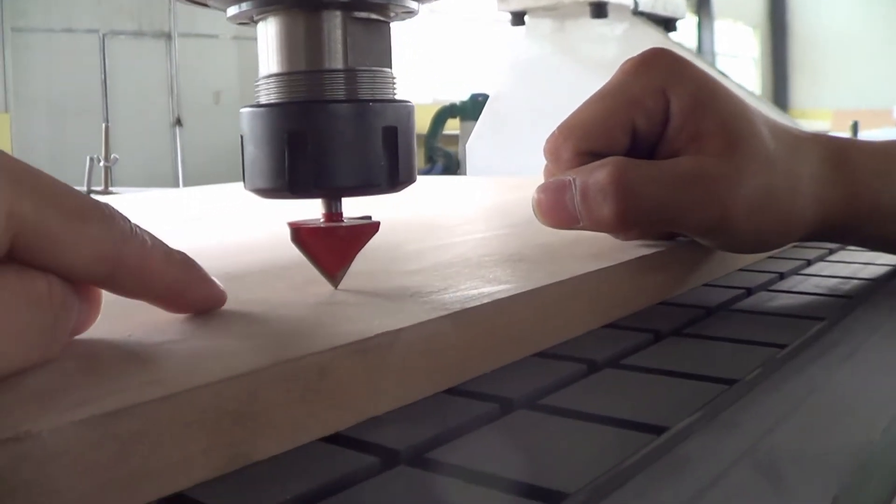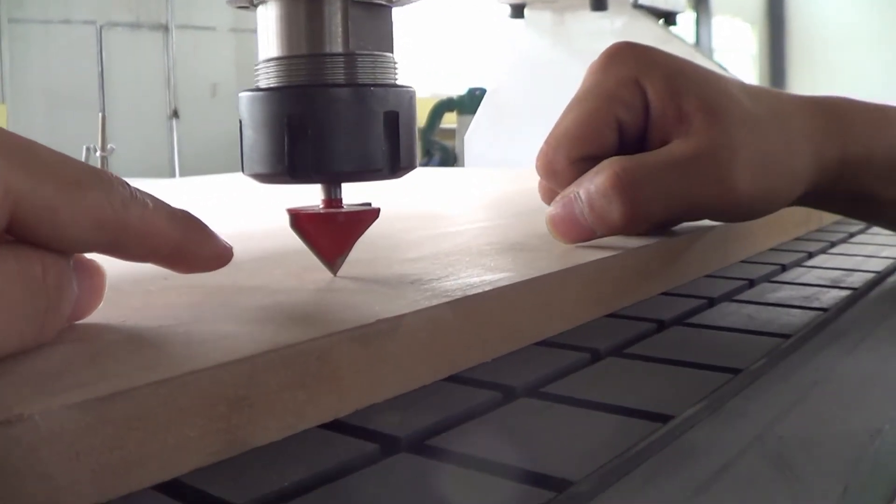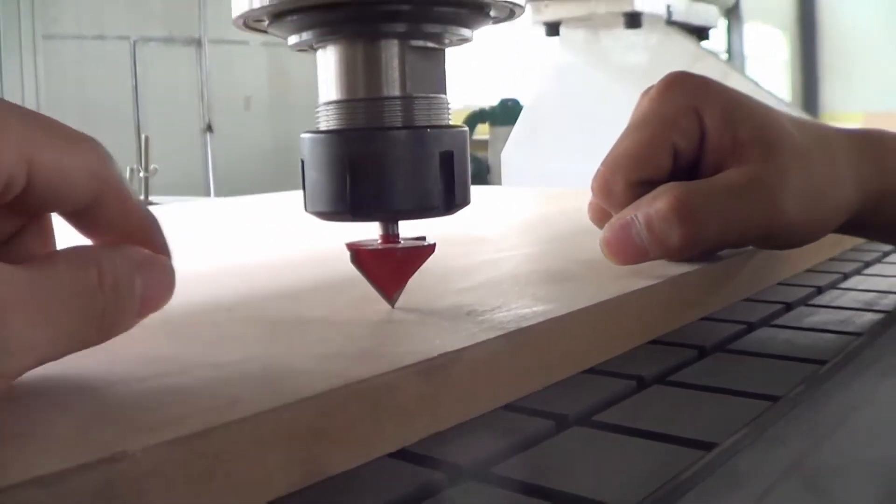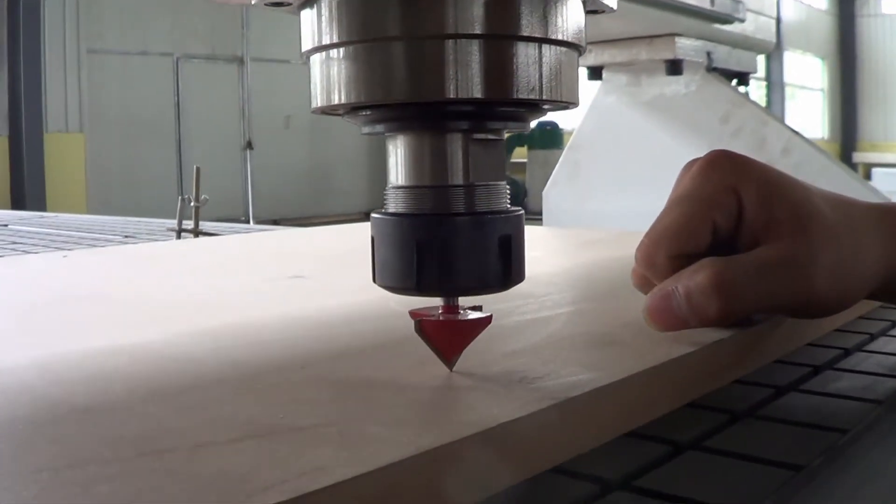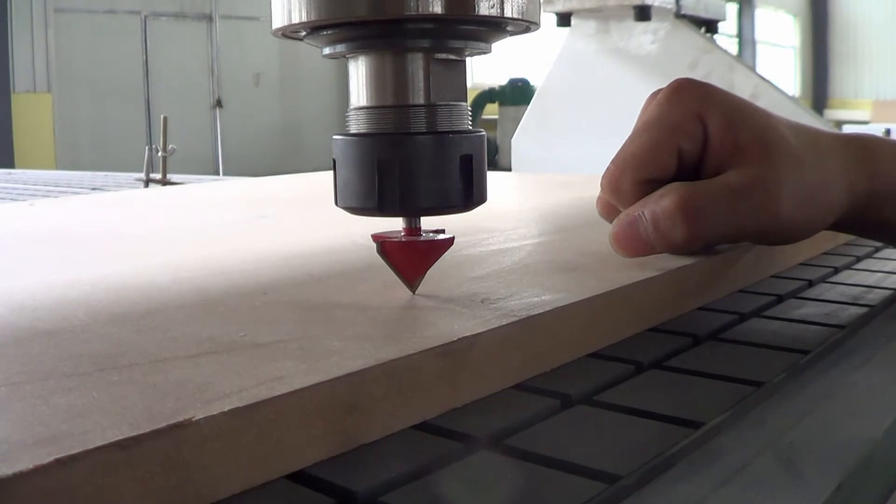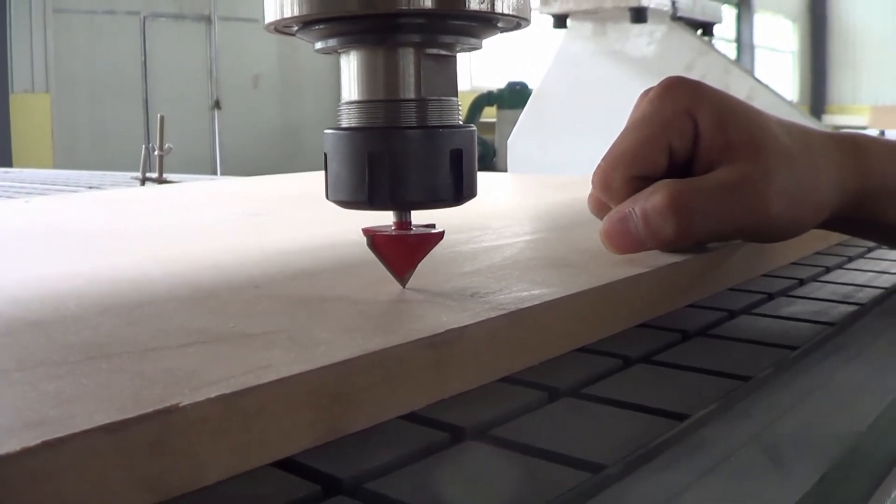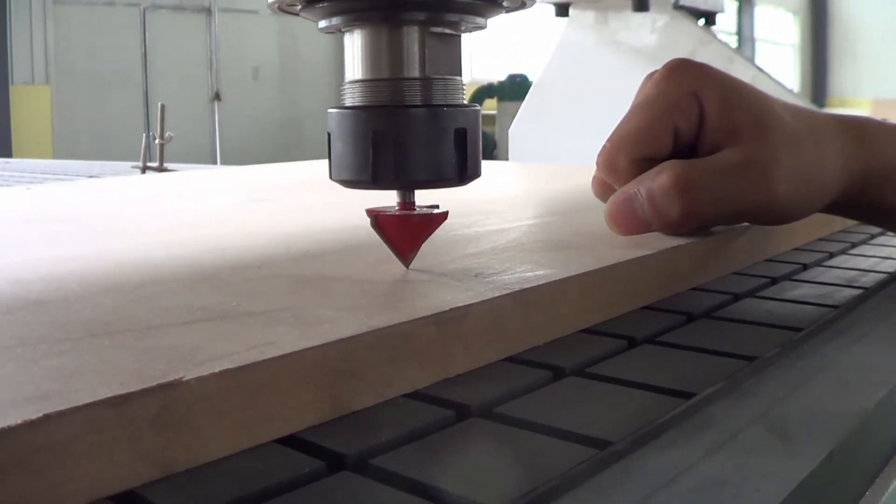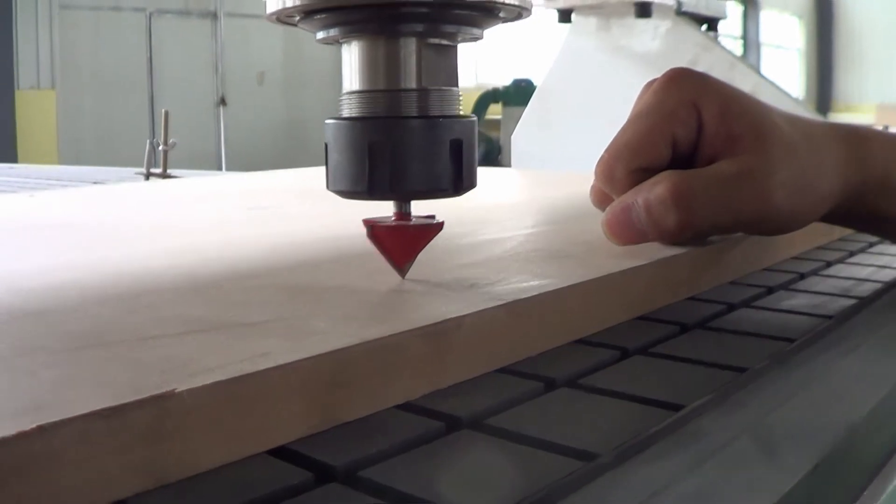So we need to now disable the spindle 1 and keep the spindle 2 activated. And then we move the spindle 2 to the top surface of the workpiece.